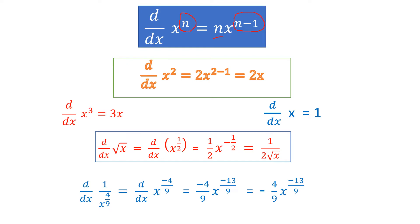For example, the derivative of x² — the power 2 comes to the beginning and the power of x gets reduced by 1, giving 2x^(2−1) = 2x. Similarly, d/dx of x³ gives 3x². The derivative of x itself is 1.